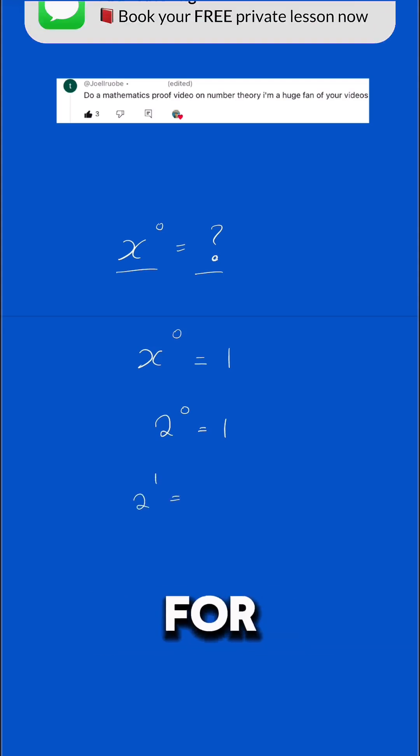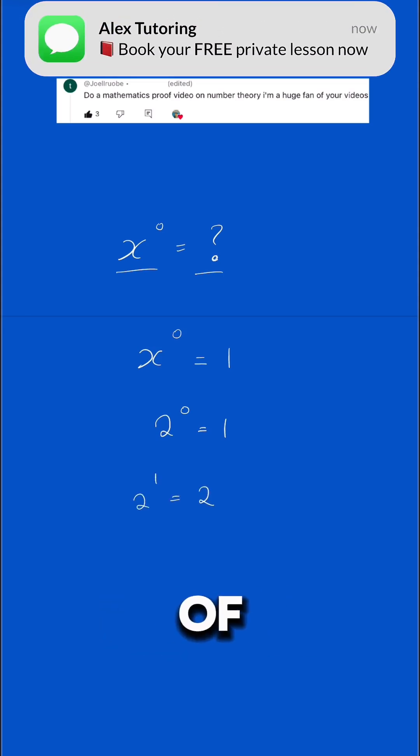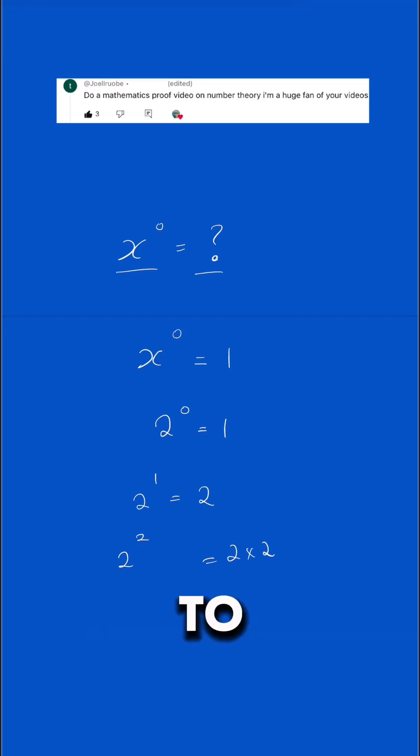And 2 to the power of 1, for example, is 2, because there's only one of them. And 2 to the power of 2 is the same as 2 times 2. So why is anything to the power of 0 equal to 1?